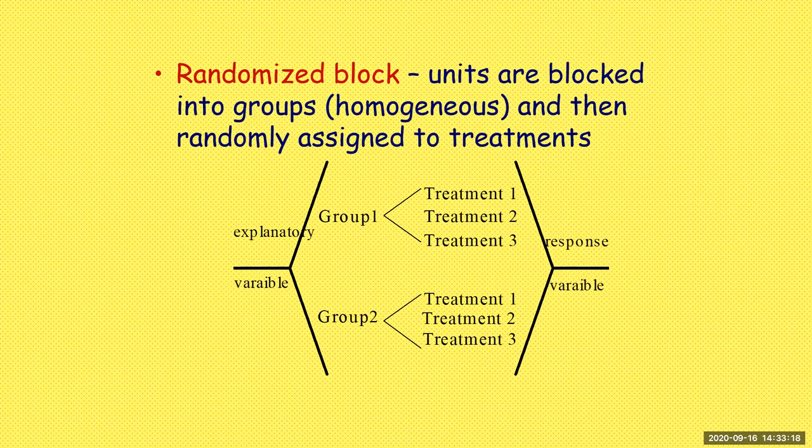Randomized block is another type of experimental design. This is when units are blocked into groups homogeneously and then randomly assigned to treatments — similar to stratified sampling. Homogeneous groups could be gender, socioeconomic level, or whatever you think might be causing a difference in the experiment.